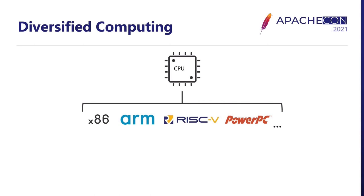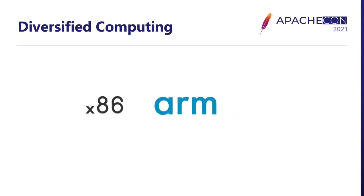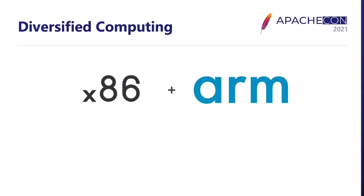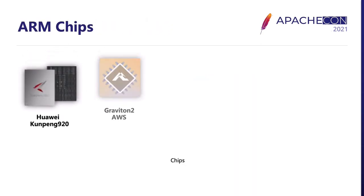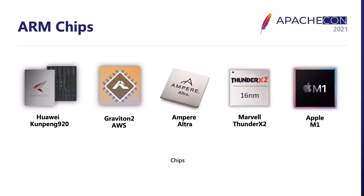In the CPU world, there are different types of architectures with their own unique properties, such as the well-known x86, ARM, RISC-V, and PowerPC. Among all those CPU architectures, x86 is the most popular one, especially in the open-source world. Today, I want to talk about how we add ARM into the open-source world. There are already many ARM chips from various companies on the market, like the data center chip Kunpeng from Huawei, Graviton2 from AWS, and Apple's M1 chip. We believe ARM chips will be a very big part of the CPU market in the near future.